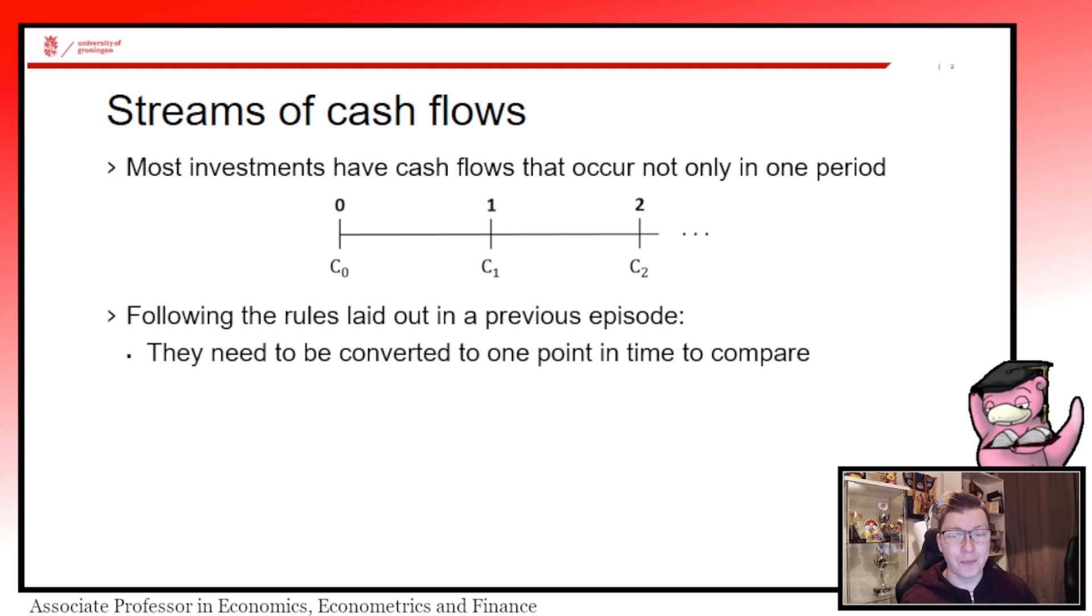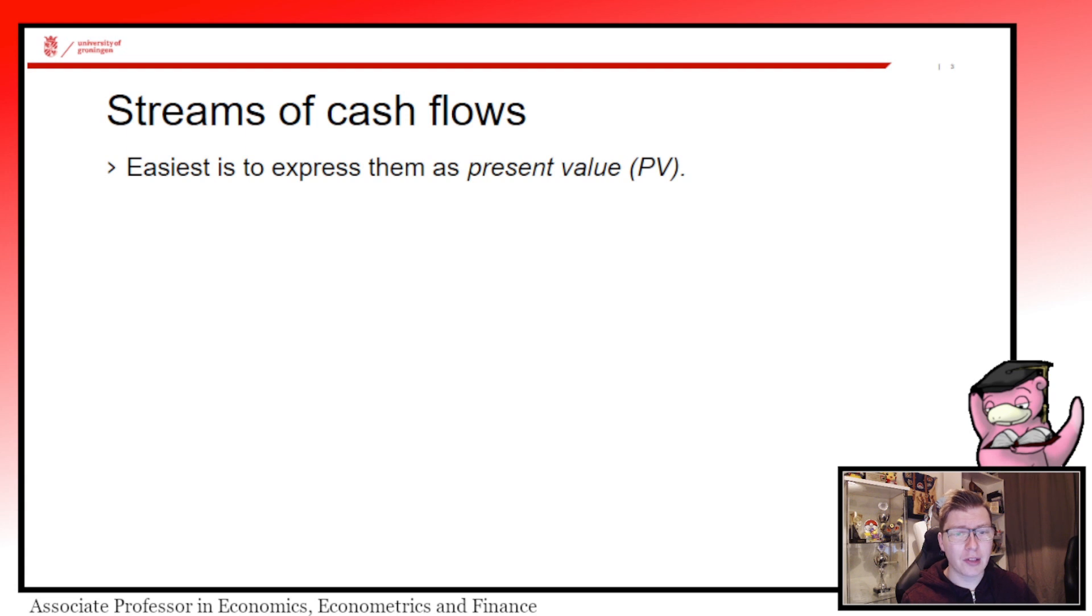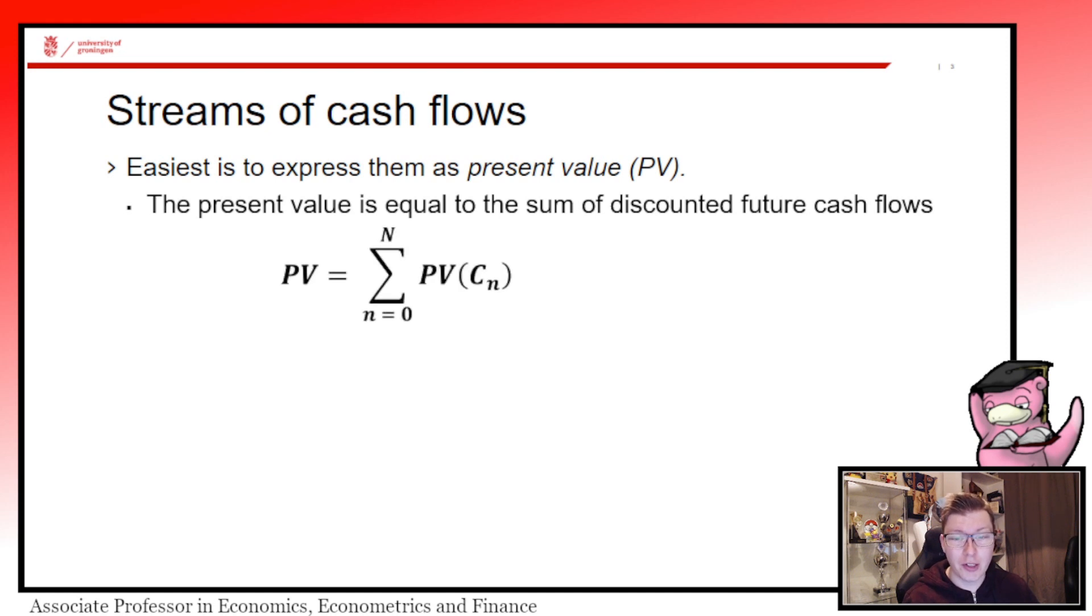Following the rules we laid out in the previous episode, in order to compare all these we have to convert them to one point in time. That is easiest done with something known as the present value - we take all values from the future and pull them back until today by discounting them with an appropriate interest rate or discount rate. The present value is equal to the sum of all these discounted future cash flows, from time zero up until N, a given point in the future.